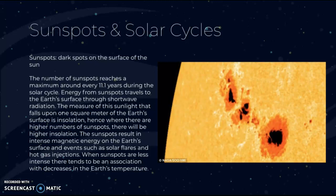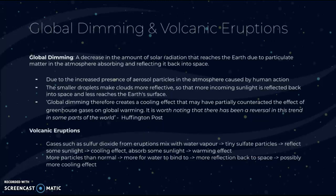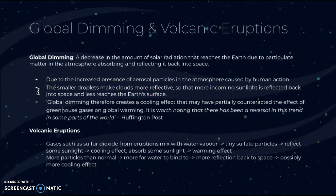The final part of solar radiation variations is global dimming. Global dimming is a decrease in the amount of solar radiation that reaches the Earth due to particulate matter in the atmosphere absorbing and reflecting it back into space. When there are small particles in the atmosphere — typically from volcanic eruptions — this results in increased aerosol particles. The smaller droplets make clouds more reflective so that more incoming sunlight is reflected back into space and less reaches the Earth's surface, possibly creating a cooling effect.